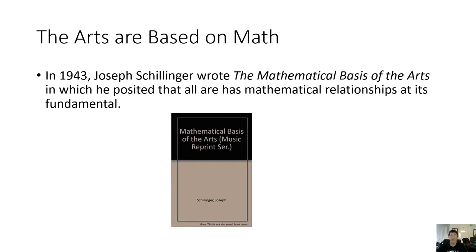In 1943, a guy named Joseph Schillinger wrote The Mathematical Basis of the Arts. When I first heard about this book I was all into it. I bought a copy — it was very hard to do at the time, a used copy when I was an undergrad. I looked at it and it was just amazing. It was actually about a thousand pages.